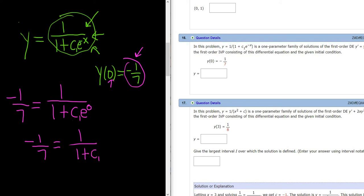That's because e to the 0 equals 1. We're looking for c1, so we can cross multiply. Cross multiplying, we get negative (1 plus c1) equals 7, right, 7 times 1 is 7.